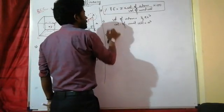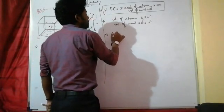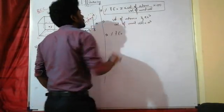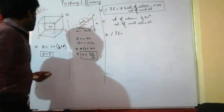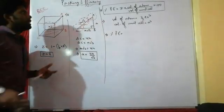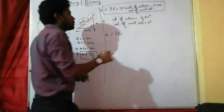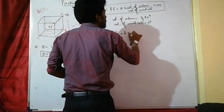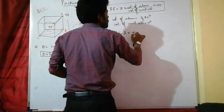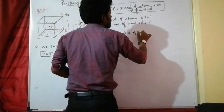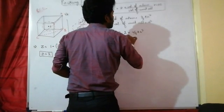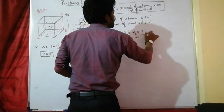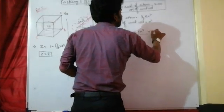Substituting into the formula: percentage packing efficiency = 2 × (4/3)πR³ / A³ × 100. We substitute Z = 2, volume of atom = (4/3)πR³, and volume of unit cell = A³.